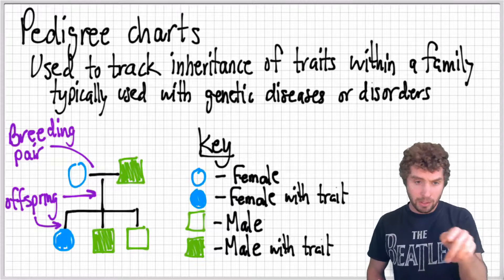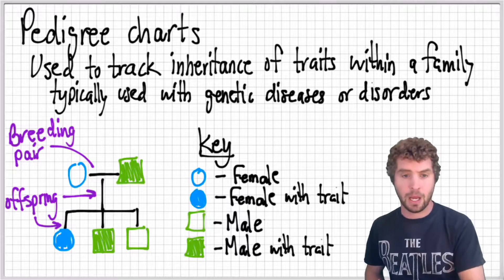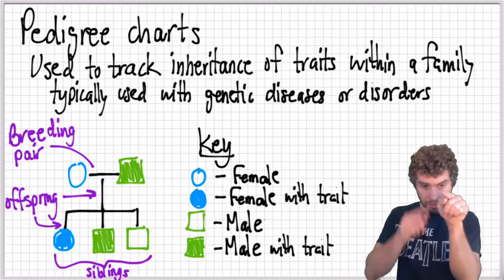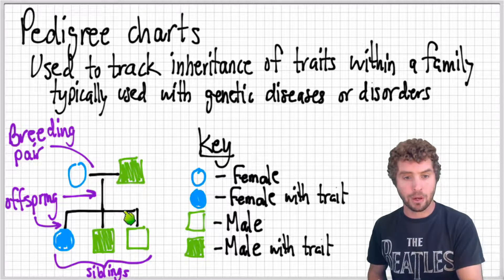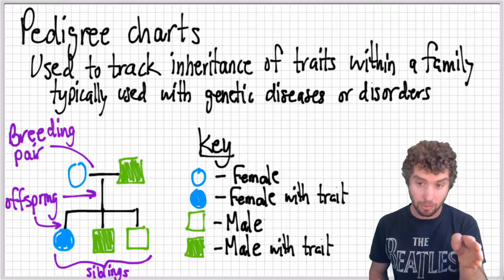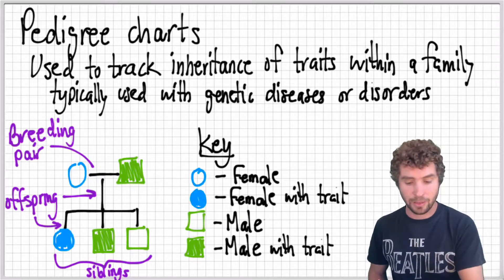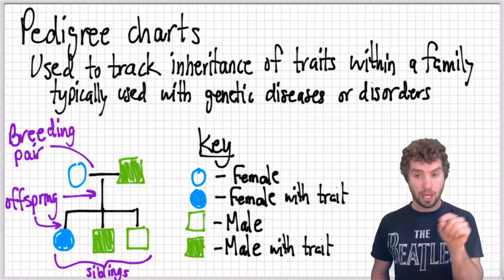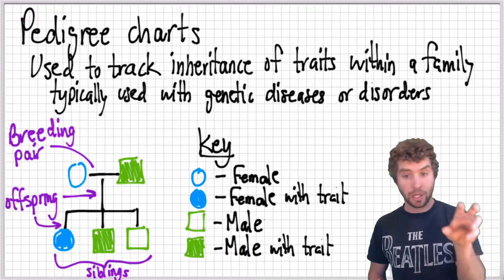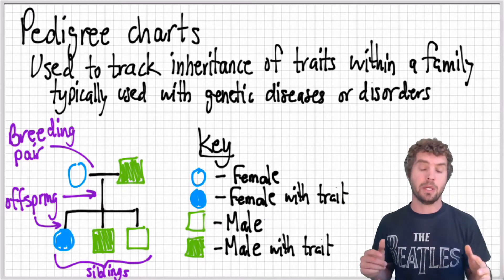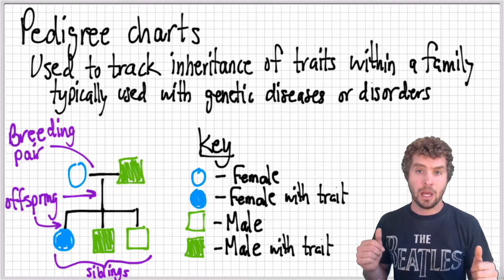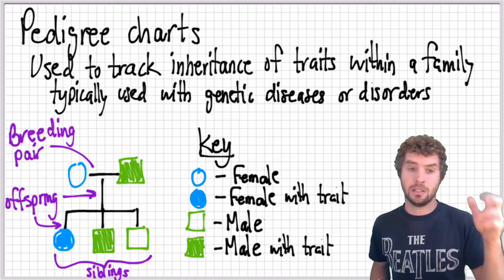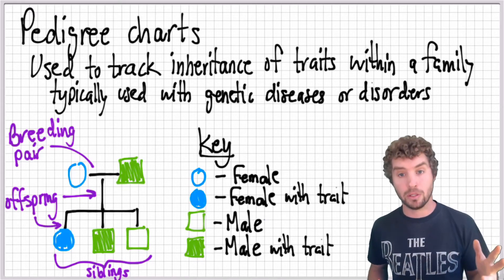You'll notice there's a horizontal line connecting siblings because this couple had three children, and there's a downward line to each. We could add more people — if one of the children has children with someone else, we can add that person into the pedigree chart, and these can obviously get really big like a whole family tree. I might do some video examples on that later, but that's it for today on inheritance, alleles, Punnett squares, and pedigree charts. Catch you later.